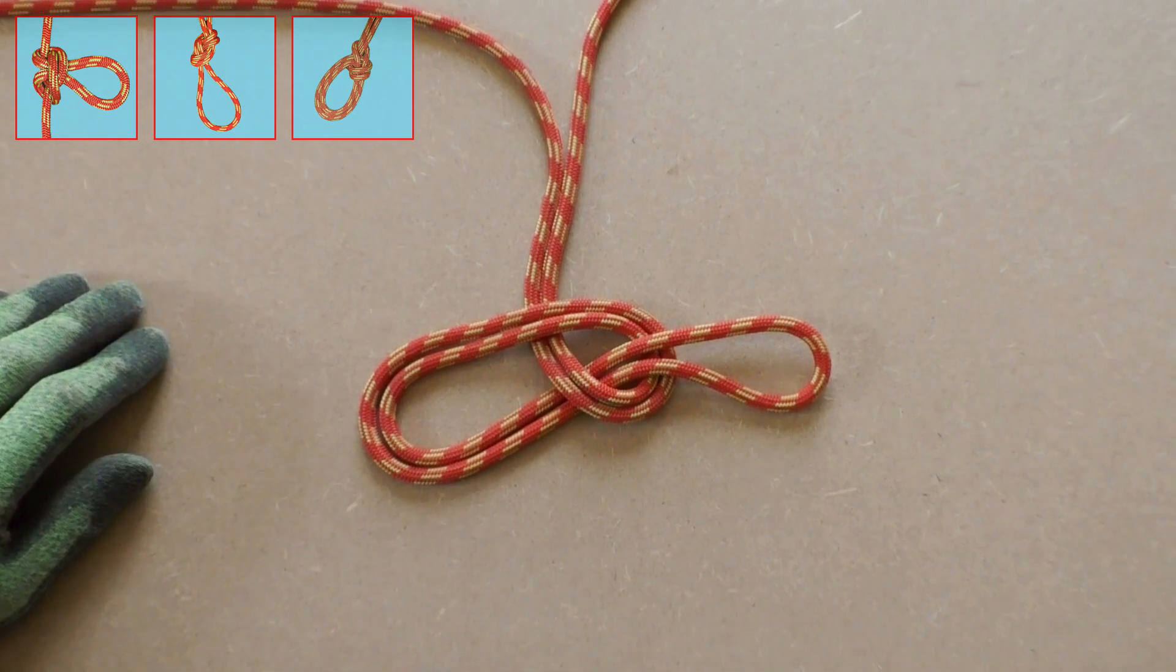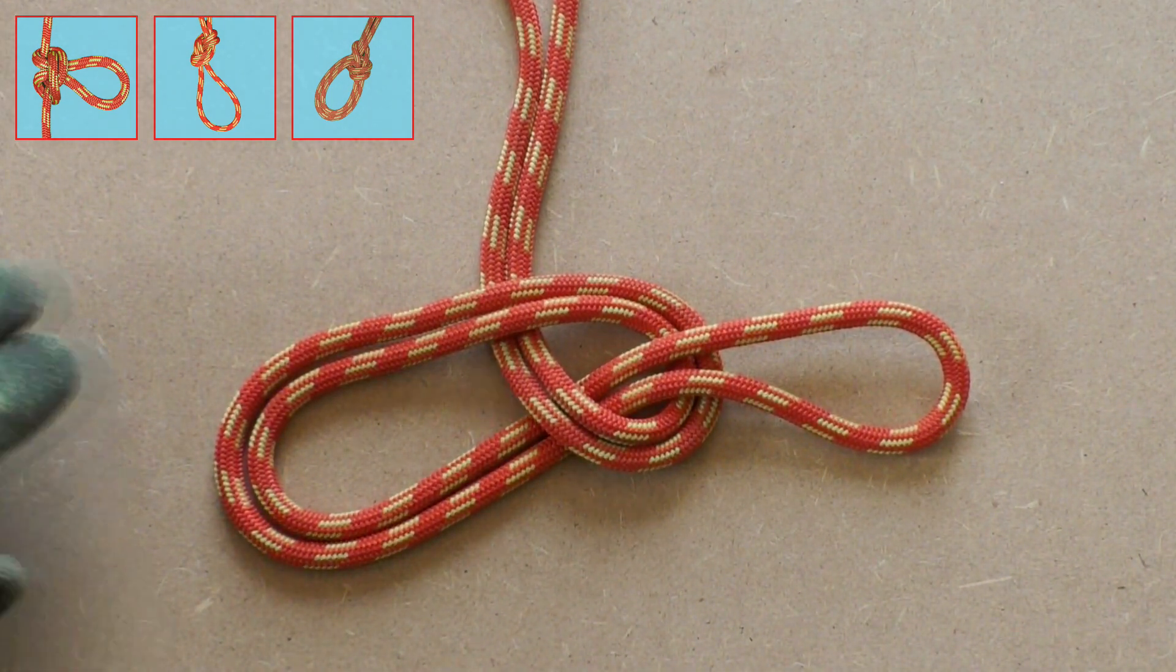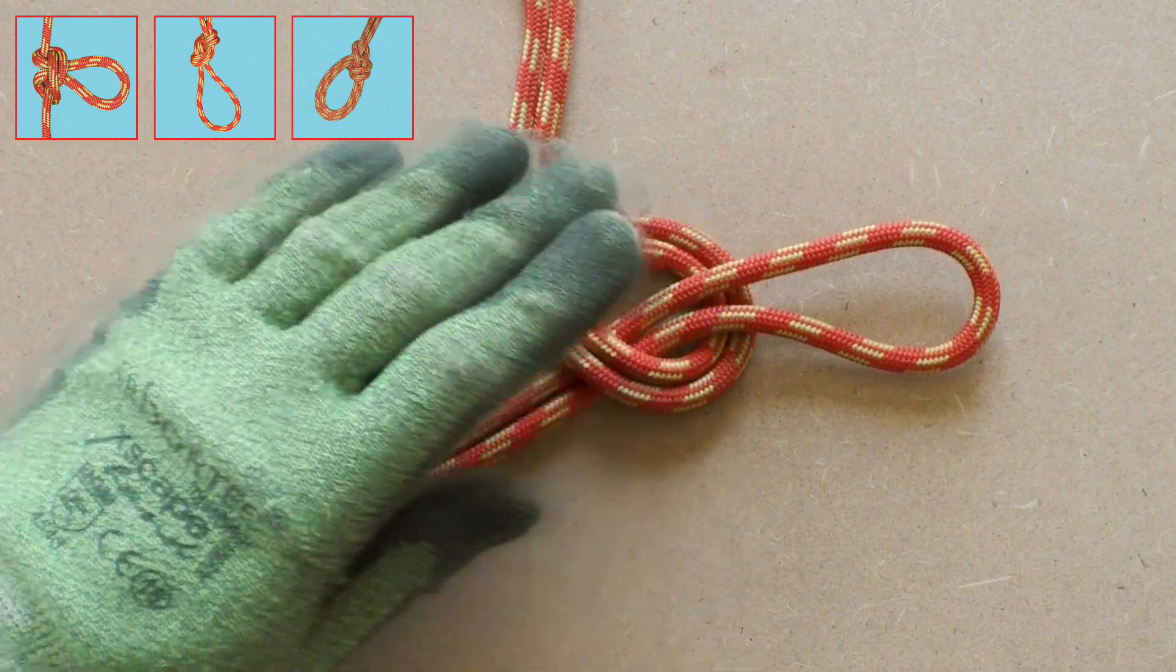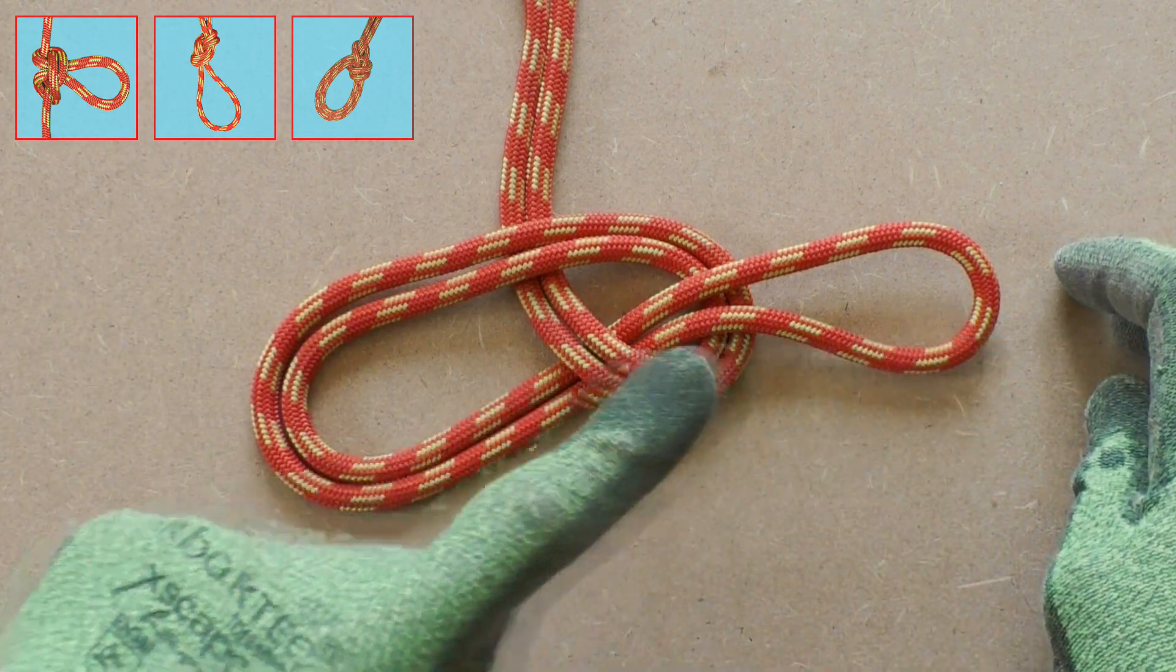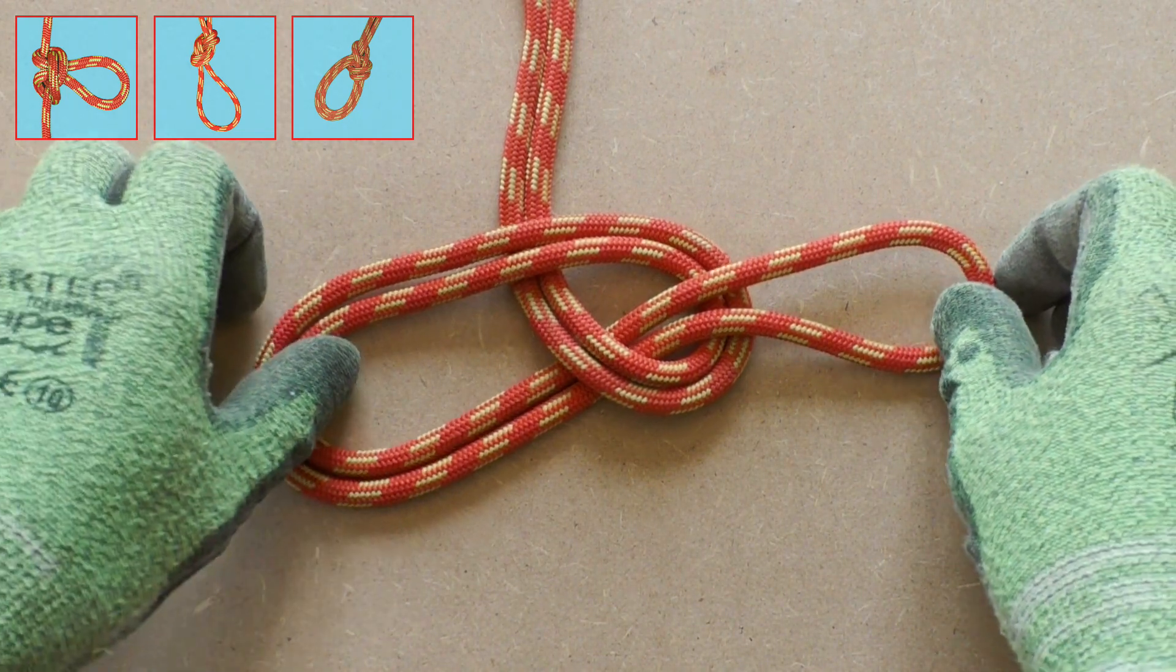Then make sure the whole knot gets put through this loop. Here you see this in action. We know this is probably the most difficult part of tying the bowline on a bite.